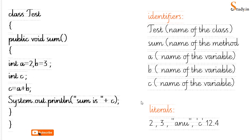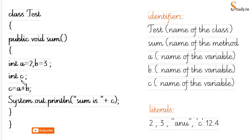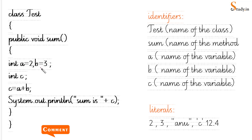What are identifiers? Identifiers are the names which we can give to a class. For example, 'test' is an identifier; 'sum' is also an identifier because it is the name of the method. a, b, c are the names of the variables, so a, b, c are identifiers. Identifiers are basically the names given to a method, a class, or a variable.